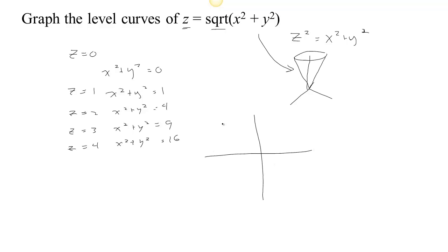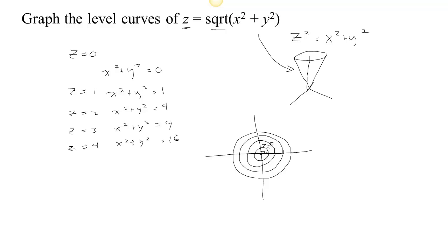The higher z gets, the circles just keep going out. Unlike the elliptic paraboloid we examined earlier, the contour curves are equally spaced. To go from the z equals two to the z equals three level curve is the same distance as going from z equals three to z equals four. These gaps are always the same, meaning the cone is not getting steeper — which squares with our intuition for the sides of a cone. We should label these z equals zero, one, two, three, four so someone can read the diagram.